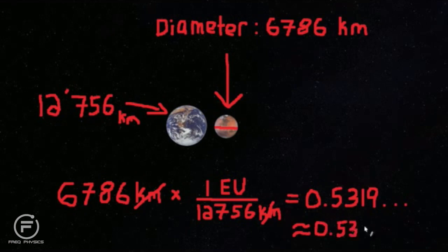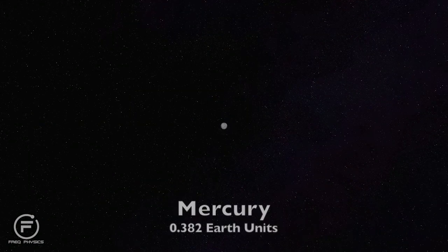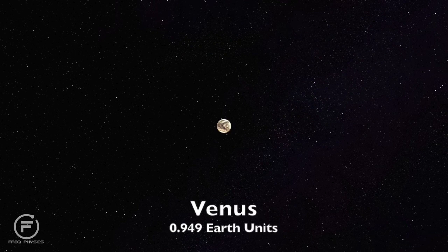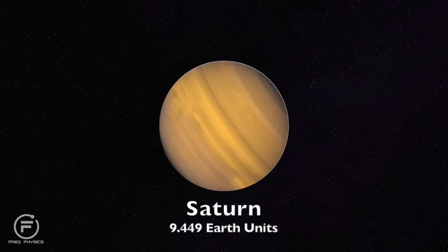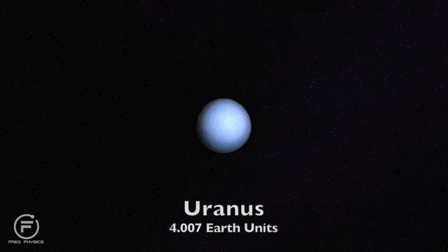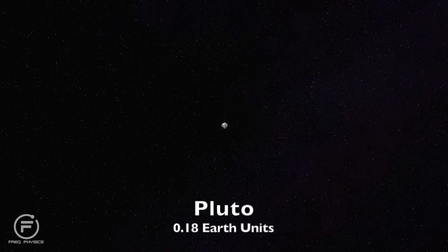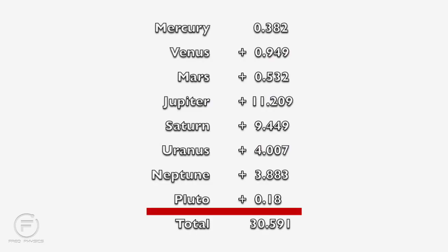We can do this with all the other planets. Mercury, 0.382. Venus, 0.949. Mars, 0.532. Jupiter, 11.209. Saturn, 9.449. Uranus, 4.007. Neptune, 3.883. Pluto is 0.18. Now that we have all the planets plus Pluto in Earth units, we can simply add them all up and we get 30.591 Earth units.